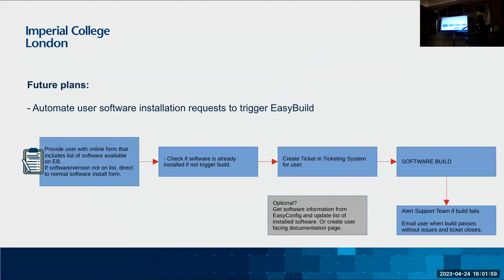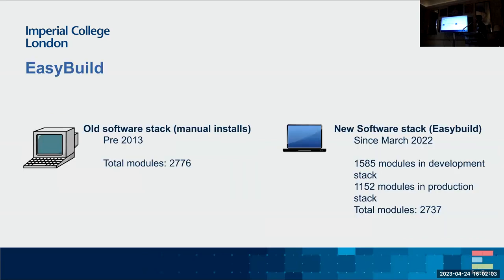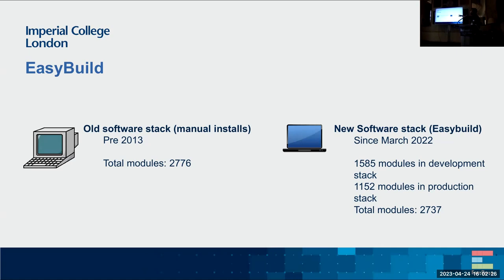To give some context on what we've achieved so far with EasyBuild: in our old stack — and I've seen software from 2013 — we had 2,700 modules. New stack, courtesy of Mr. Sasmanhausen behind me, we already have 2,737 between our production and development stack. We're almost there. And I remember spending weeks and weeks to install certain software.